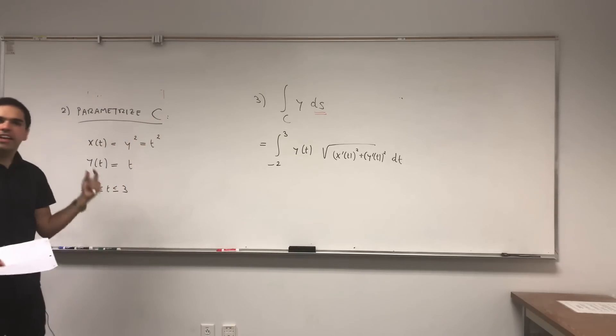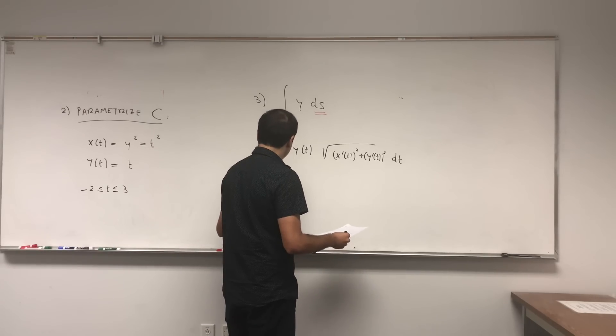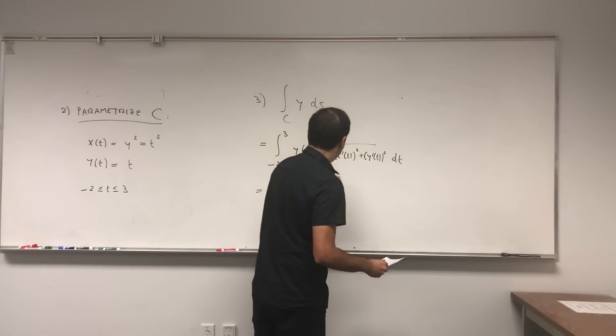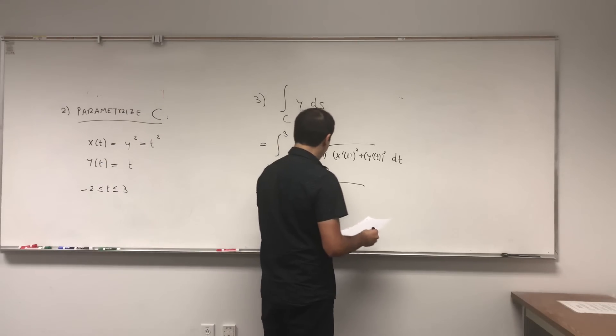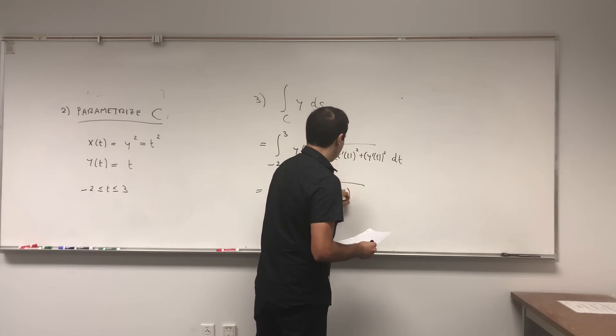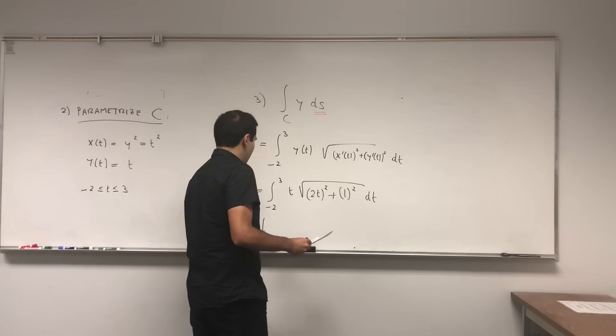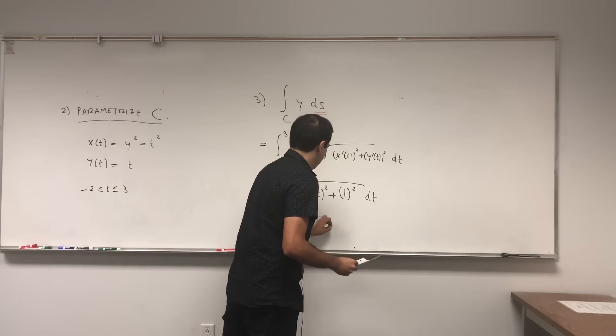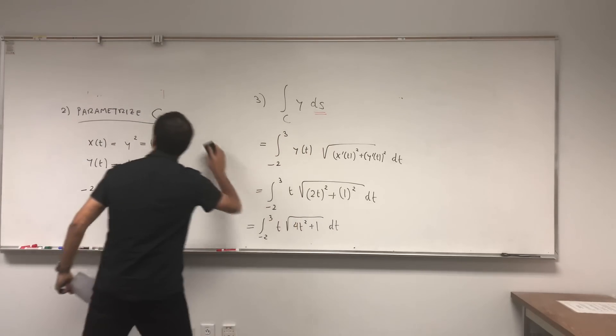And once you plug in X and Y, you're just left with an ordinary integral. So what this becomes is the integral from minus 2 to 3, y is just T, and square root, so X prime is 2T, so 2T squared, and Y prime is 1, so plus 1 squared dT. And you're left with integral from minus 2 to 3 of T times square root of 4T squared plus 1 dT. And if you want to, you can use a substitution or you can do it directly.